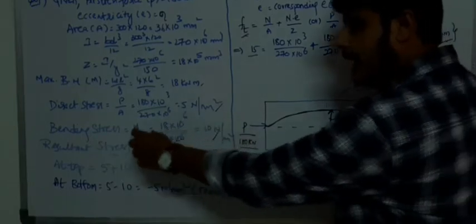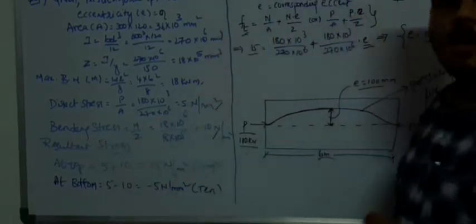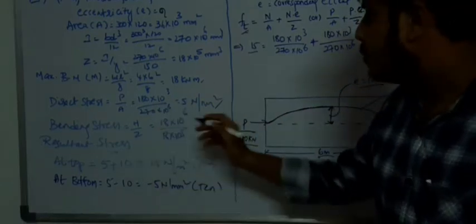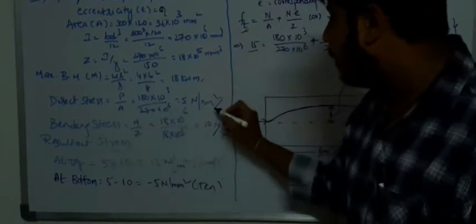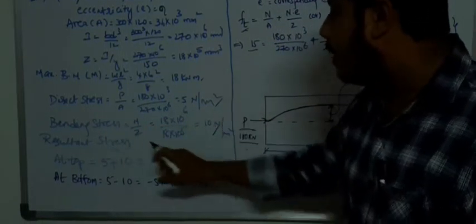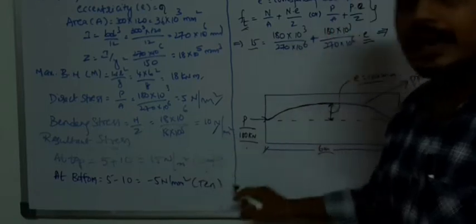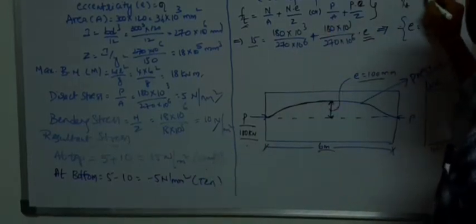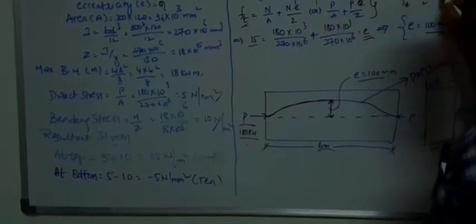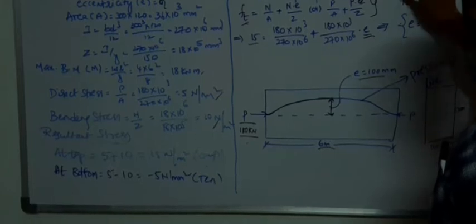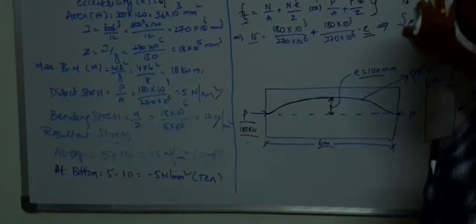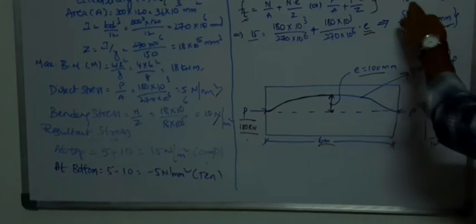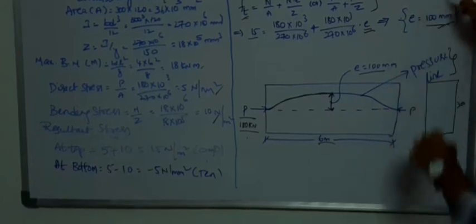The bending stress equals M divided by Z, as solved in the previous problem. Here, the direct stress P/A equals 5 N/mm², and the bending stress M/Z equals 10 N/mm².